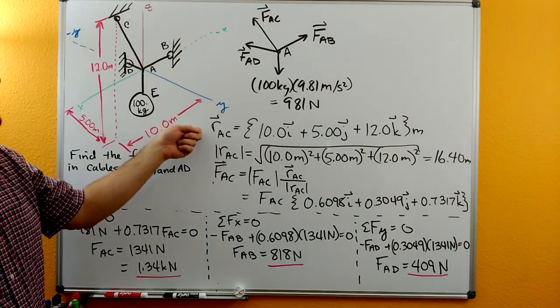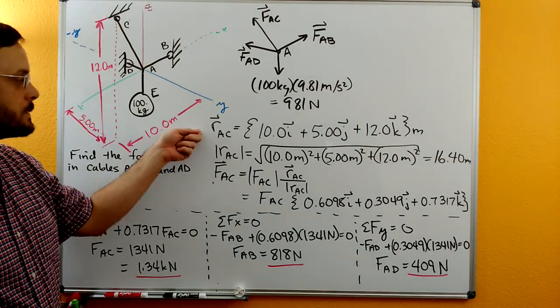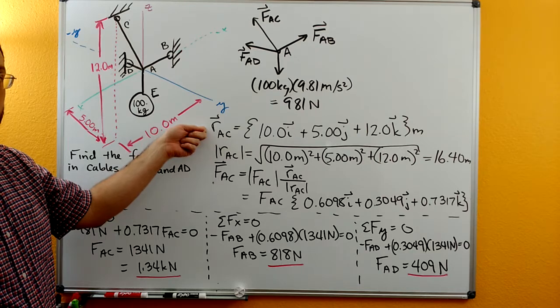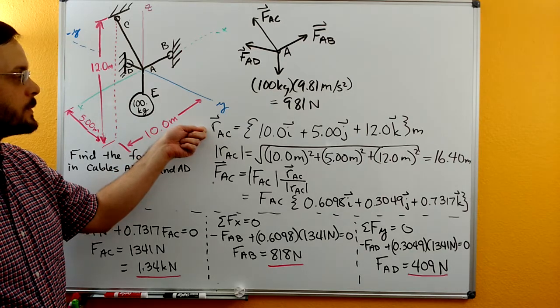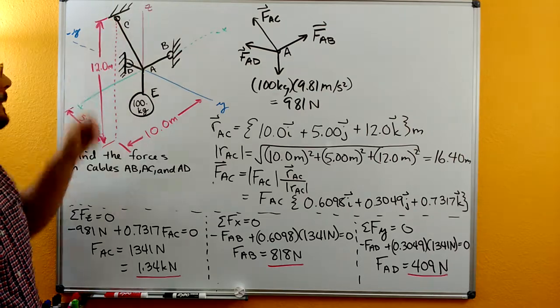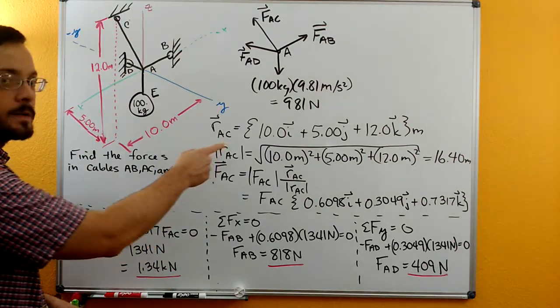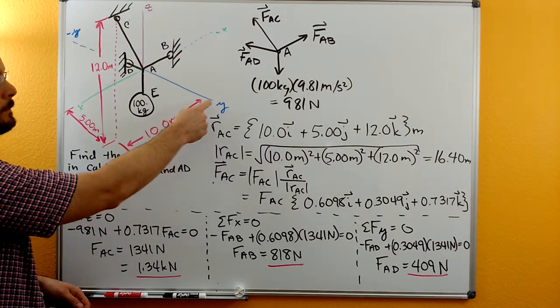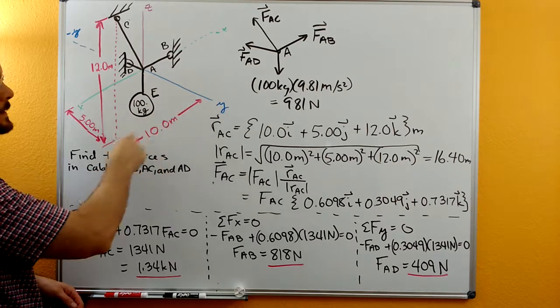We'll start by writing a vector for that displacement. So this is R, since this is a displacement or position vector, it starts at A and goes to C. So in x, you can see there's a 10 meter distance. This 10 meters,